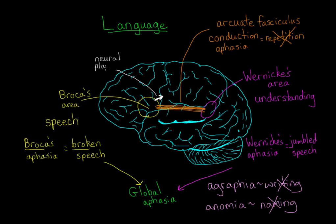The brain's ability to adapt and move functions to new parts is called neural plasticity, or synaptic plasticity. The neurons are plastic, or flexible enough, to learn new routes and connections, thus allowing undamaged parts of the brain to take over functions that the damaged parts previously performed.